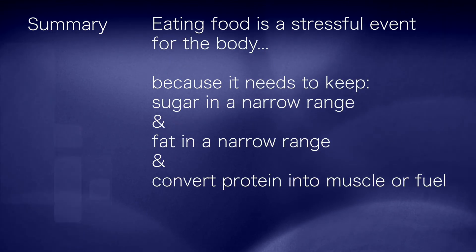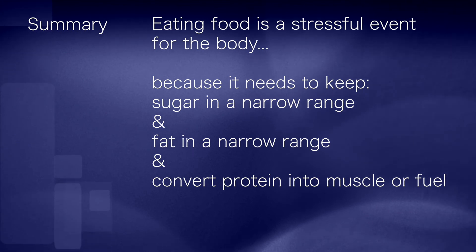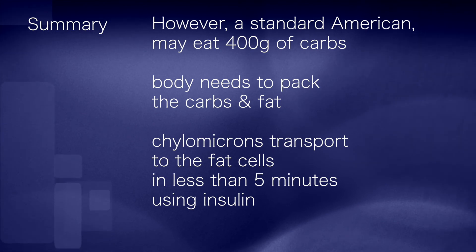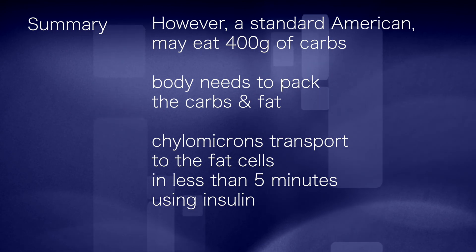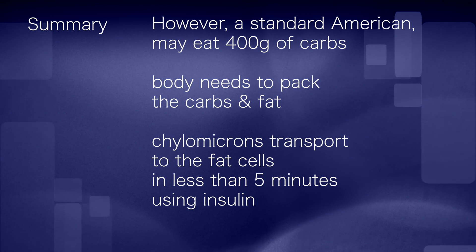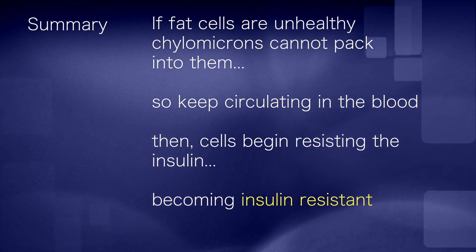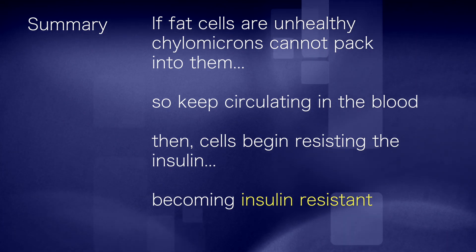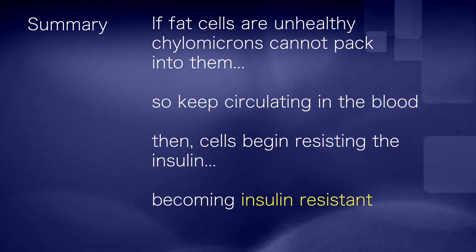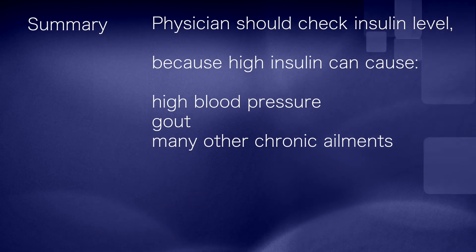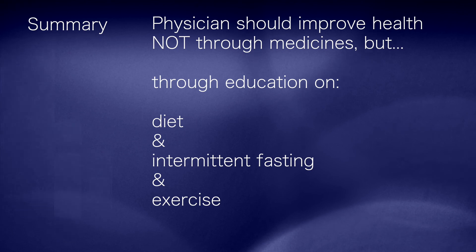Eating food is a stressful event because the body must keep sugar, fat, and protein in narrow ranges. A standard American may eat as much as 400 grams of carbs. The body packs carbs and fat using chylomicrons into fat cells in under five minutes using insulin. If fat cells are unhealthy, chylomicrons keep circulating and cells begin resisting insulin. Physicians should improve health through education on proper diet, intermittent fasting, and exercise rather than medicines.